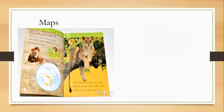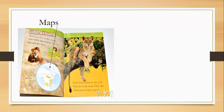Maps are another text feature found in some books. When reading about places like the desert or the ocean, a map might point out where in the world you can find them. This book was about lions, and it has a map showing where lions live. The text says most lions live on the savannah in Africa, and the map points to Africa. Maps are really helpful for getting geographic information to go along with what you're reading.